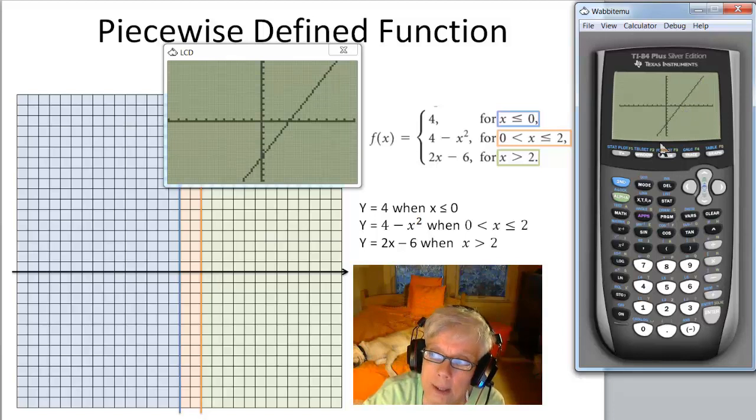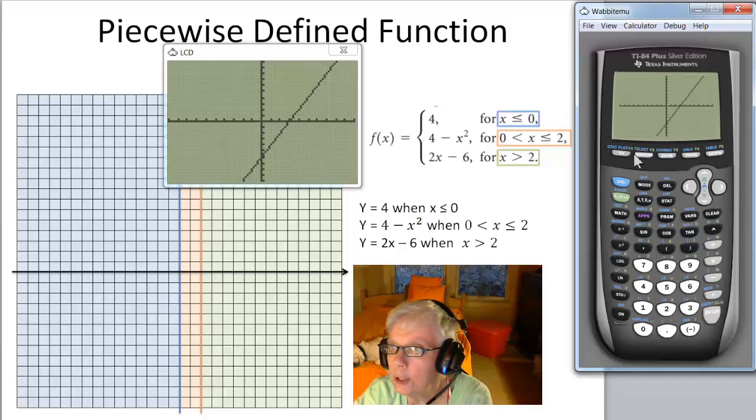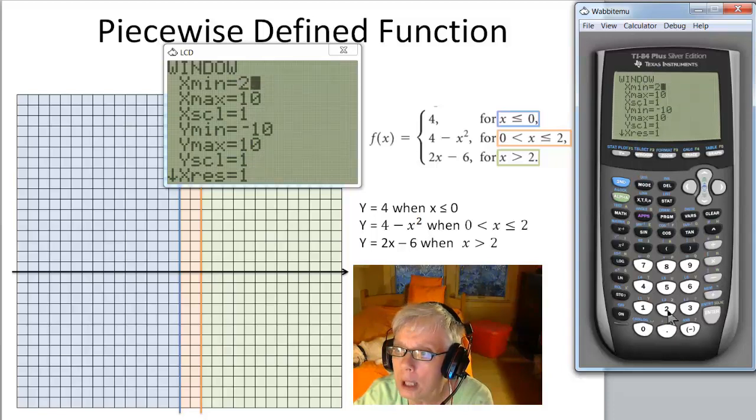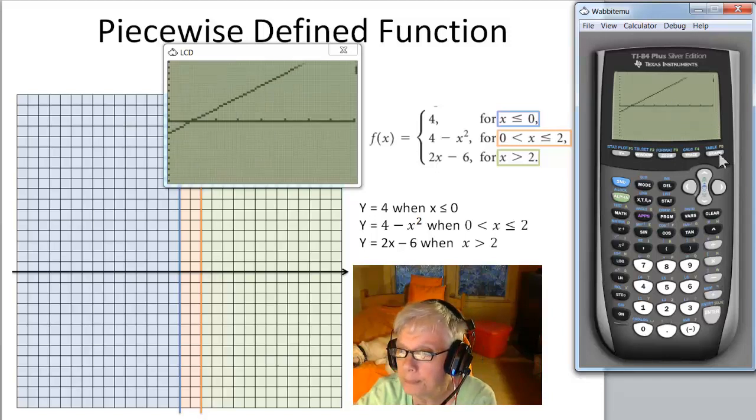Now there is the line, but the thing is that we're only interested in the part of the line that goes from x equals 2 to the right. So let's adjust our window. And I'm going to make my x min 2, and x max is going to do the equivalent of going to the right forever. There we go.